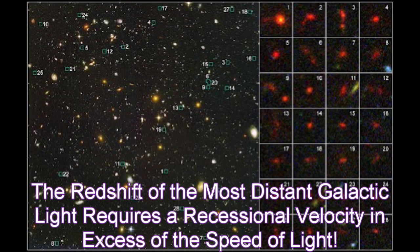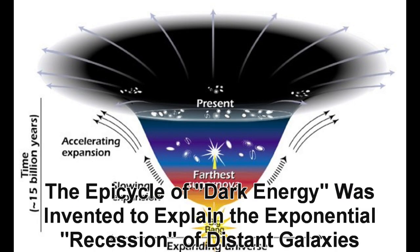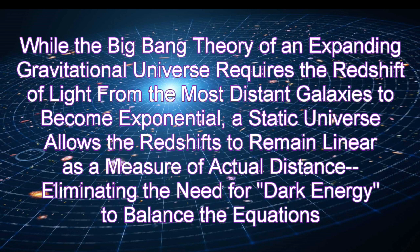The redshift of the most distant galactic light requires a recessional velocity in excess of the speed of light. The epicycle of dark energy was invented to explain the exponential recession of distant galaxies. While the Big Bang theory of an expanding gravitational universe requires the redshift of light from the most distant galaxies to become exponential, a static universe allows the redshift to remain linear as a measure of actual distance, eliminating the need for dark energy to balance the equations.